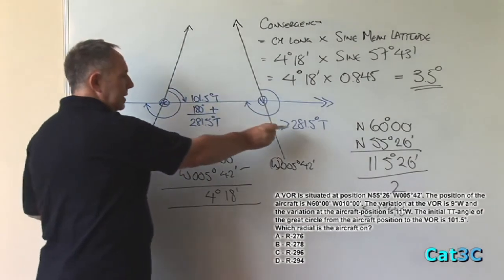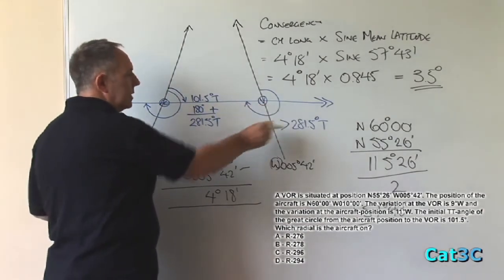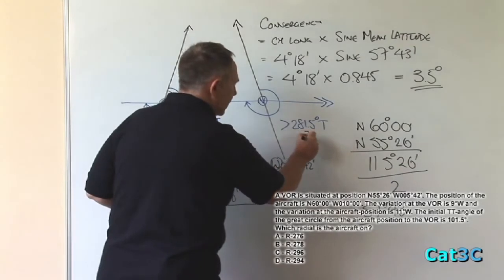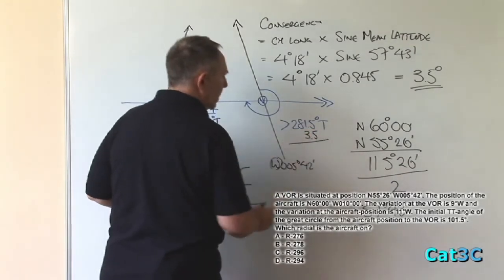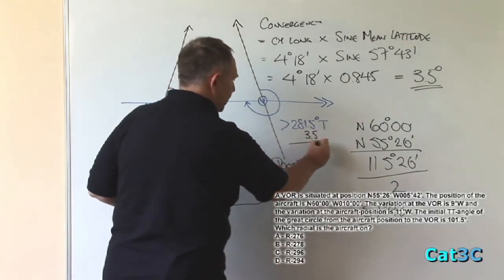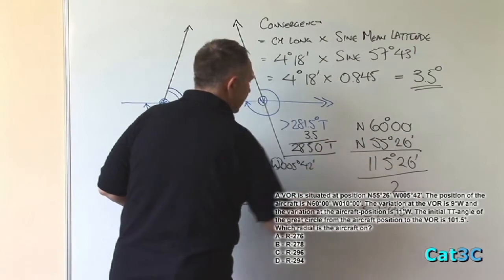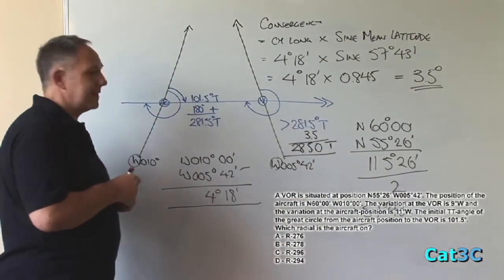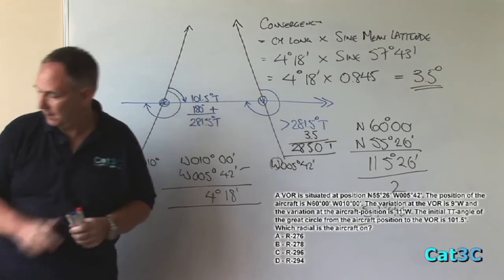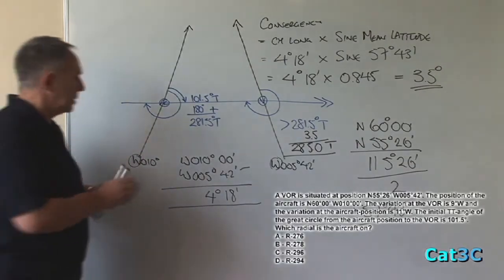We know that the track at the VOR is greater than 281.5, so we simply add the 3.5 to it, which gives me a value of 285 degrees. Remember though that that is in degrees true. What I need is the value in degrees magnetic.